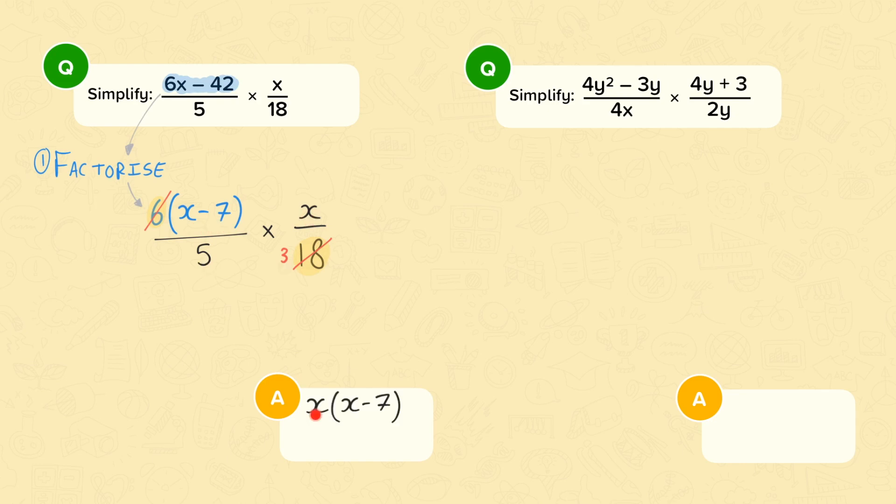Now, we can multiply the numerators and the denominators. So, the numerator, x brackets x minus 7, close brackets, that's over 15. Now, you do not need to go any further. You don't need to expand the numerator to x squared minus 7x. It's actually much simpler to leave the numerator factorised.